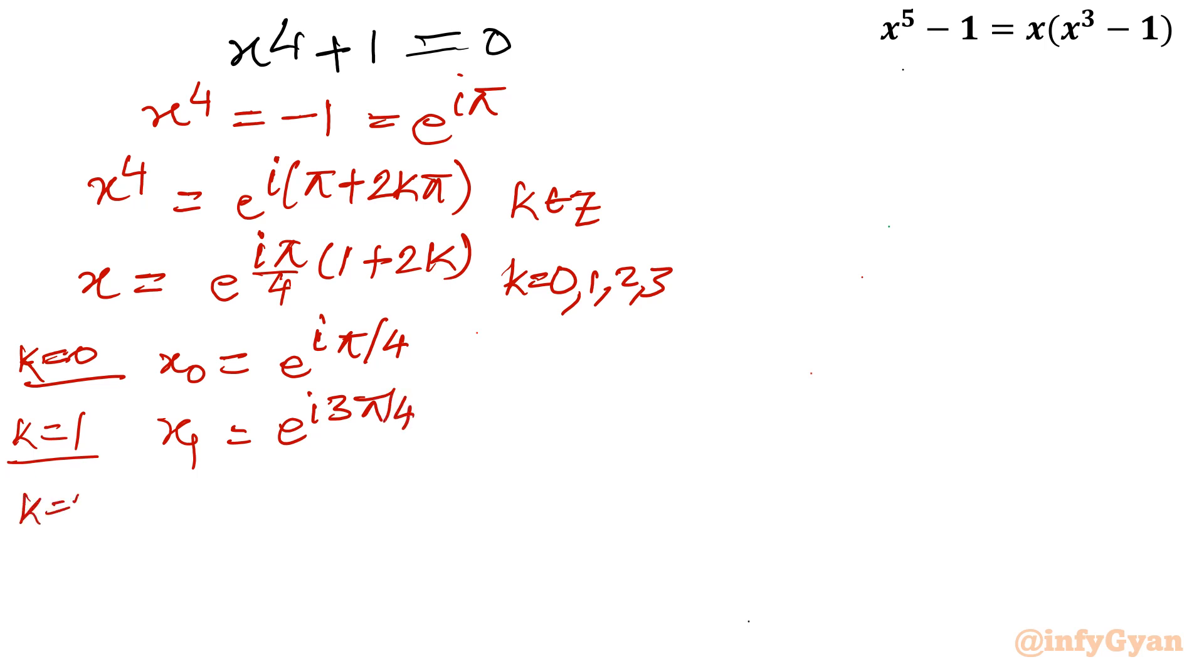And last value, last solution I will get by putting k = 3. Our solution will come out e^(i7π/4). And if you will conclude then you can write all the four values. But I want to show you the unit circle.